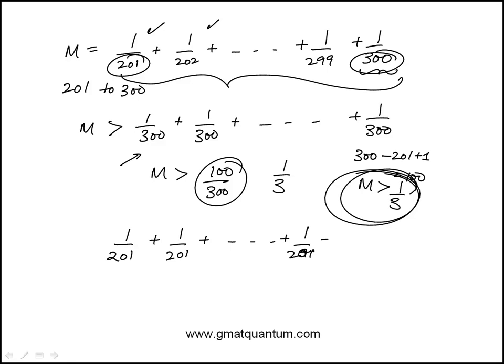This is also 1 over 201. Again, I have 100 terms, so this is 100 over 201, which is approximately half. That's the upper limit.